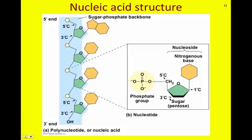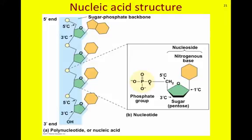Looking at a close-up of the nucleotide, which consists of a nucleoside — the nitrogenous base and the sugar — we see that the one-prime carbon is attached to the nitrogenous base. The second-prime carbon is next, followed by the third-prime carbon where the hydroxyl group attaches. Then the fourth-prime carbon, and finally the fifth-prime carbon, to which the phosphate group is attached. This whole structure is the nucleotide, and the sugar plus nitrogenous base is the nucleoside. Another word for nucleic acid is polynucleotide, meaning many nucleotides — therefore nucleic acids are polymers of nucleotides.